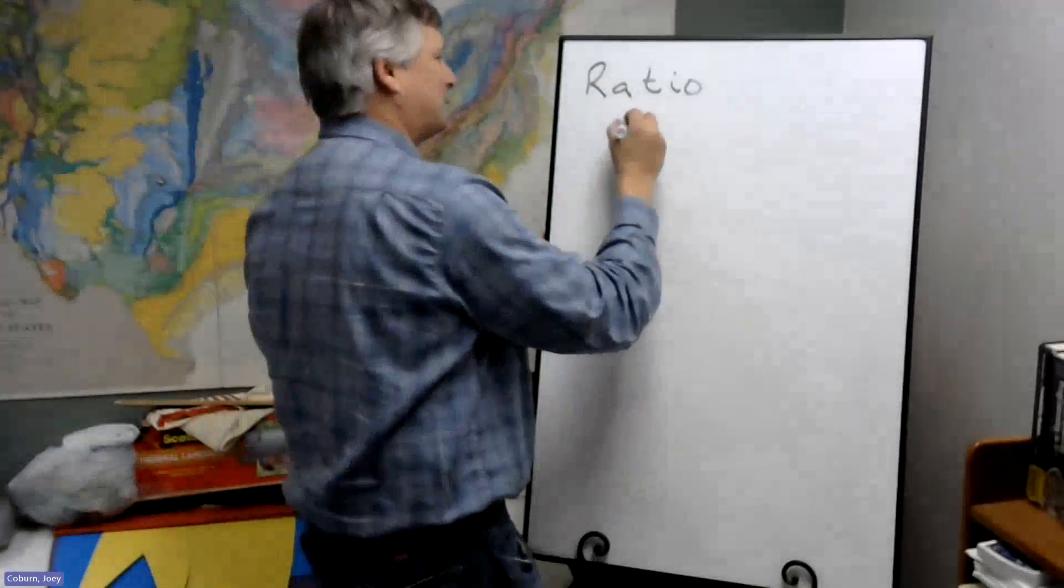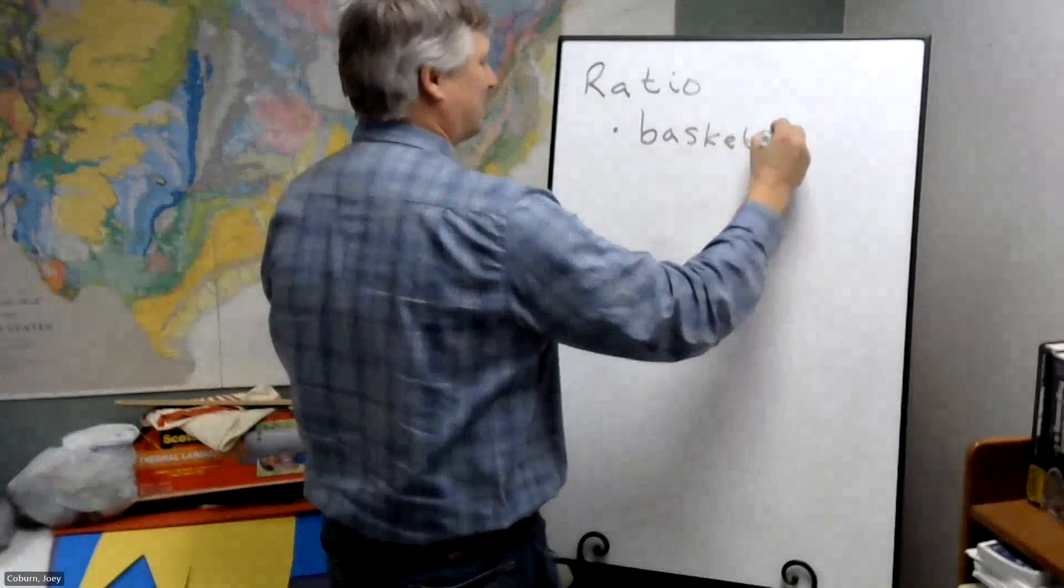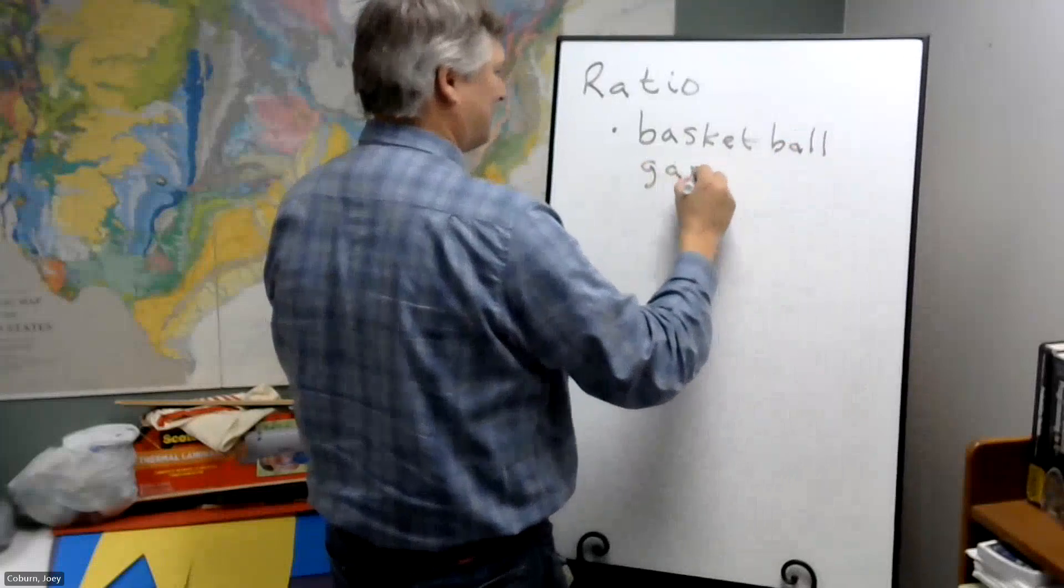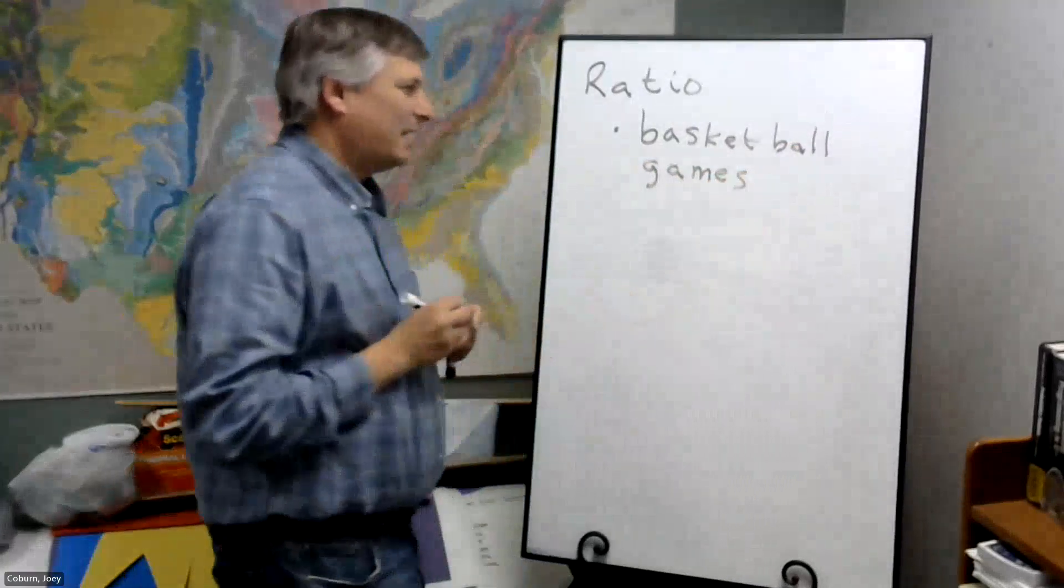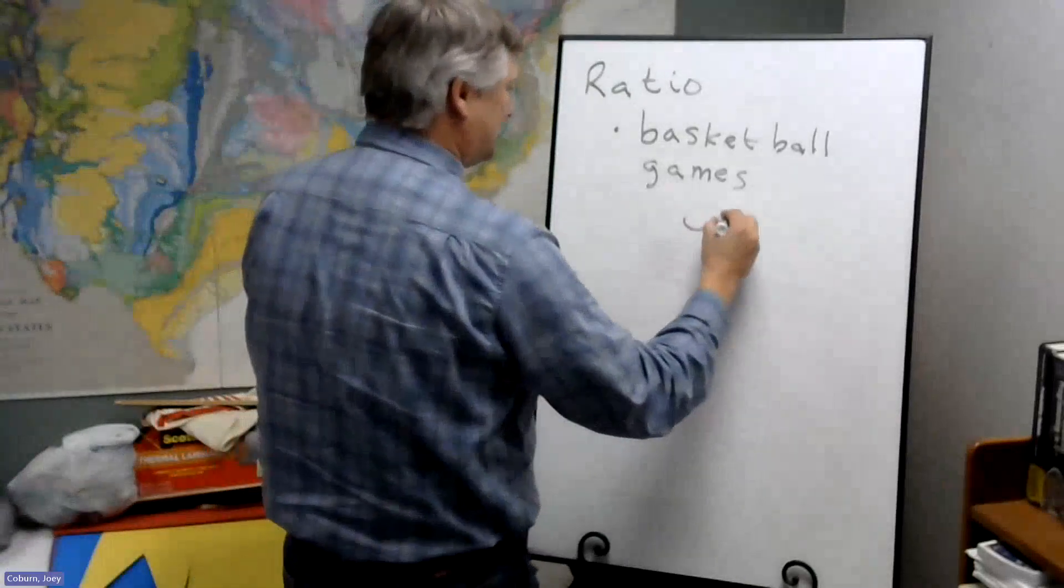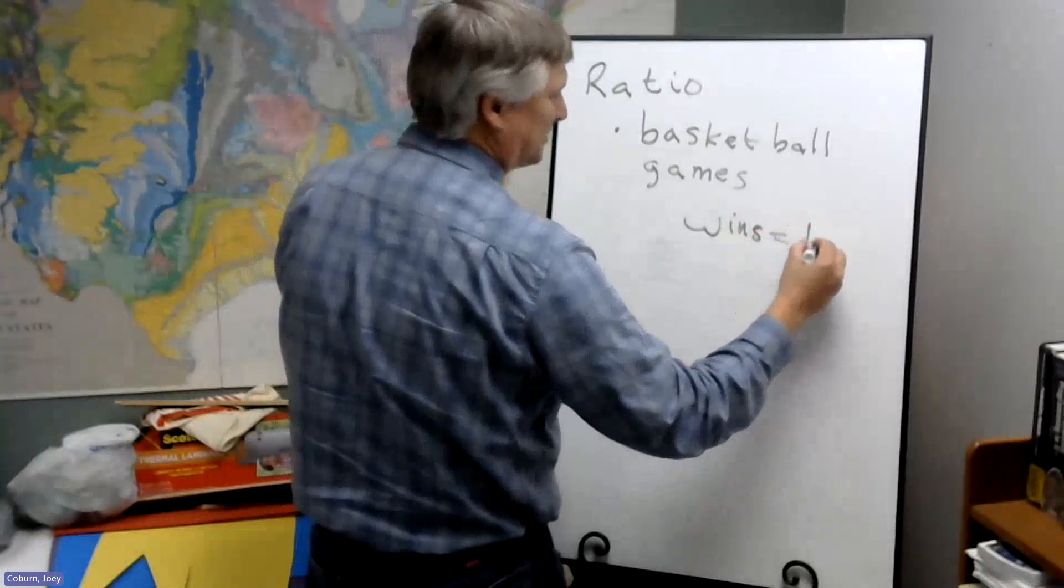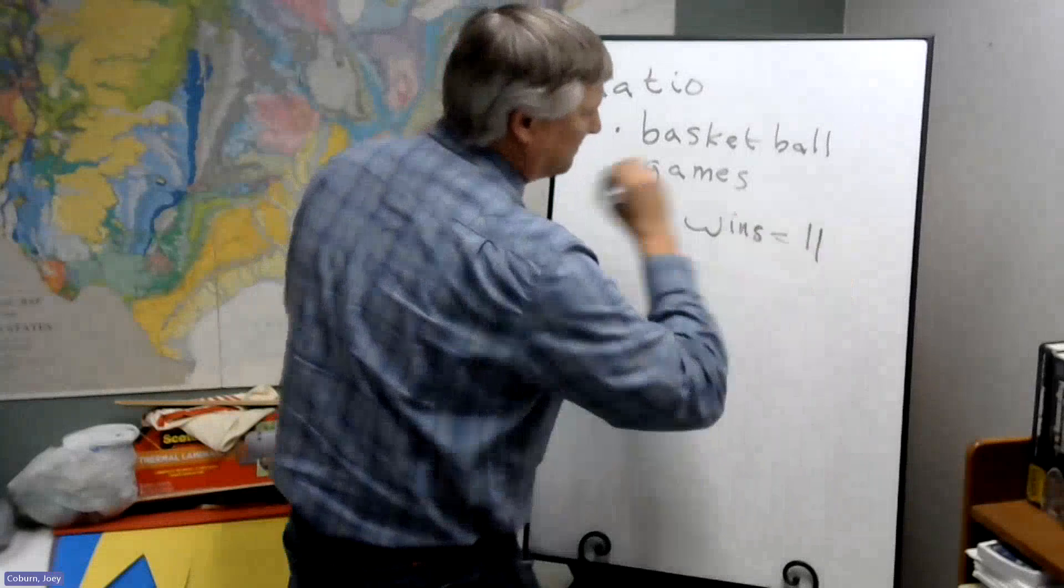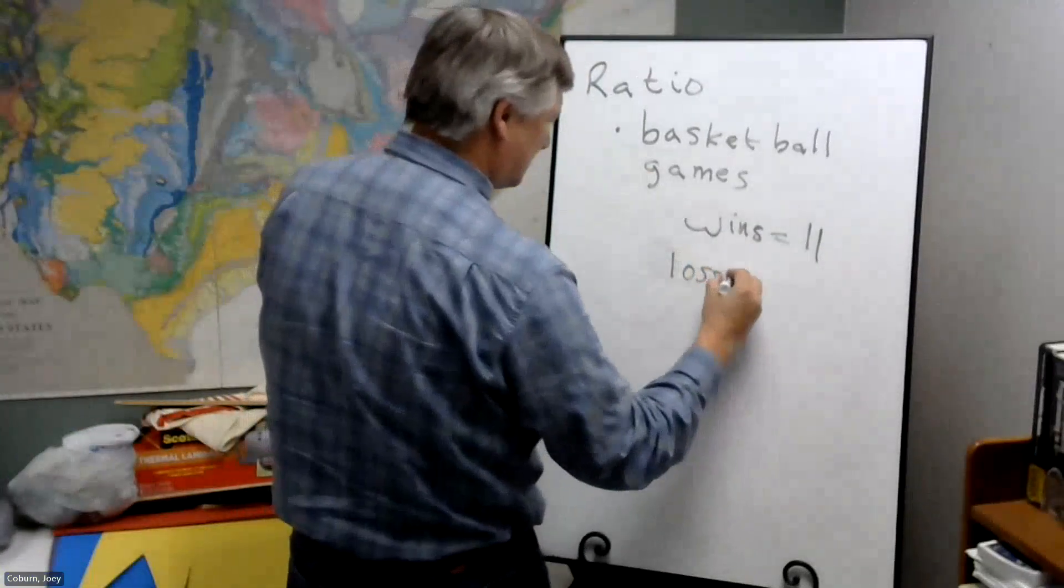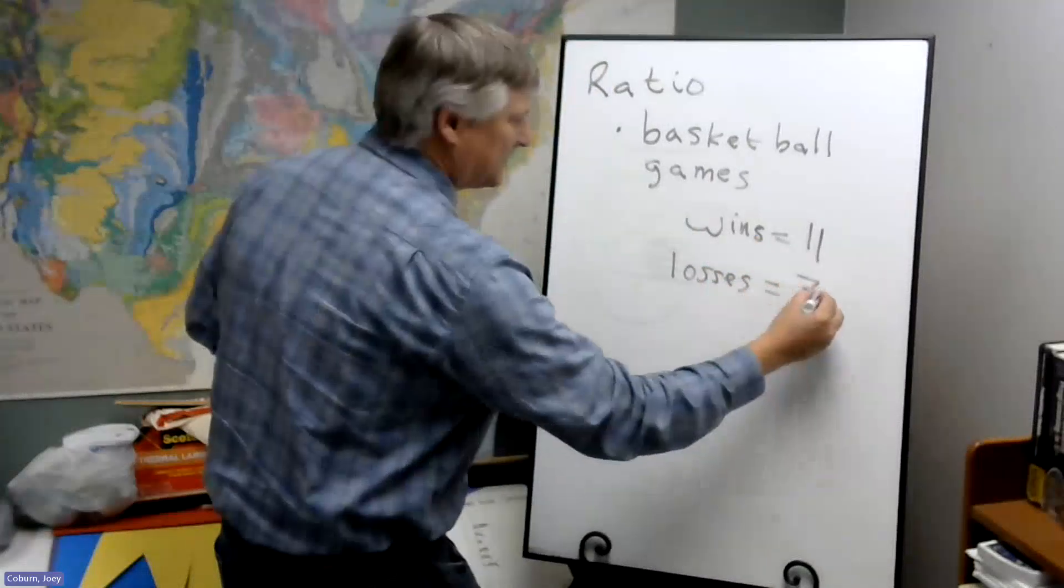Let's say we have basketball games. And let's say in a season of basketball, the wins equals say 11, 11 wins. And the losses would be say seven, say we have seven losses.